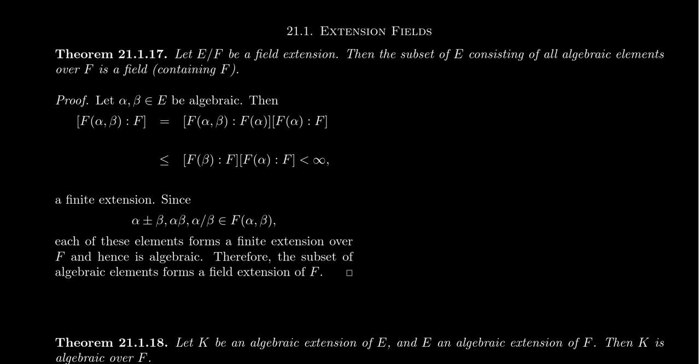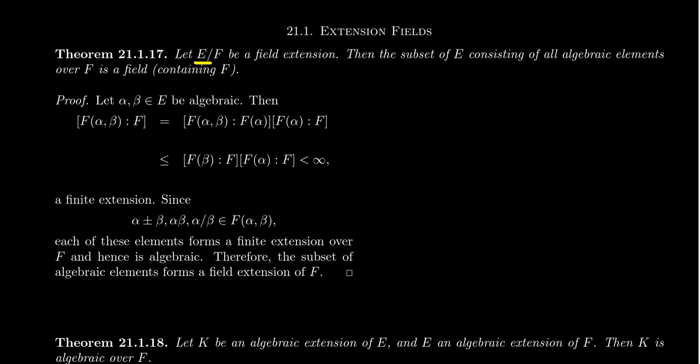The first theorem: suppose we have a field extension E over F. Then the subset of E consisting of all algebraic elements over F is itself a field. E could have algebraic elements over F, but it could also have some transcendental ones. If we only focus on those elements of E which are algebraic over F, that will give you a subfield of E, which will be a field extension of F, because every element of F is algebraic over F.